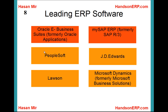Who are the leading ERP vendors? Oracle and SAP are the largest players. Oracle's software is called Oracle E-Business Suite, it used to be known as Oracle Applications. SAP's software is called MySAP ERP, it used to be known as SAP R3. PeopleSoft and JD Edwards are also big players in the ERP market, but Oracle purchased PeopleSoft, so now PeopleSoft is also maintained by Oracle Corporation.